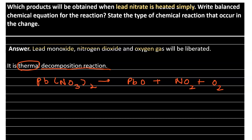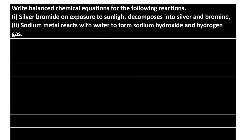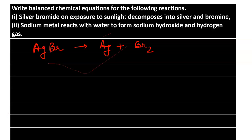The next question asks us to write balanced chemical equations. First: silver bromide (AgBr) decomposes on exposure to sunlight into silver (Ag) and bromine. Since bromine exists as Br2 in nature, we balance by writing 2AgBr → 2Ag + Br2. This is the balanced equation for decomposition of silver bromide.